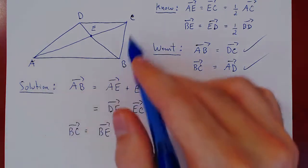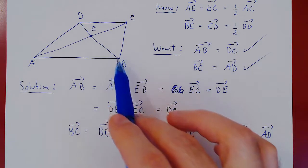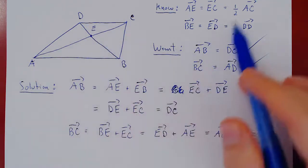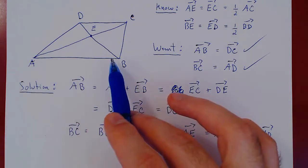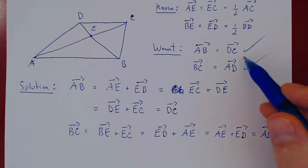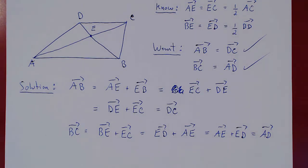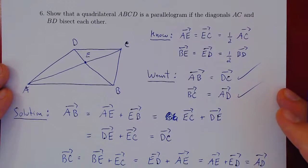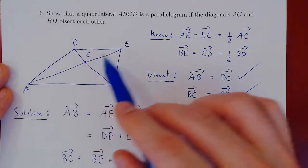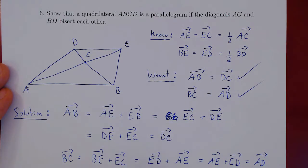This proves that, even though our picture is drawn as a crooked quadrilateral, if the diagonals bisect each other, then automatically ABCD is a parallelogram. A natural question is: what if we switch the assumption and the conclusion? Our next video will prove the converse — that if you have a parallelogram, then automatically the diagonals must bisect each other.